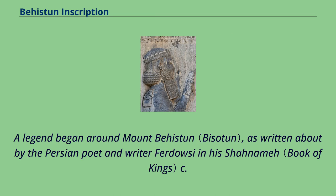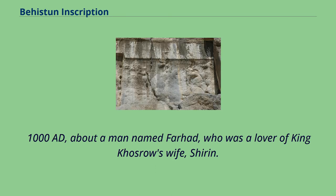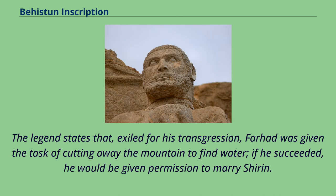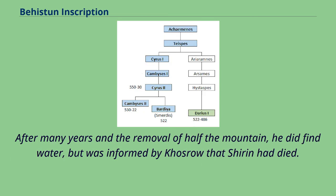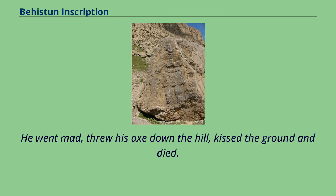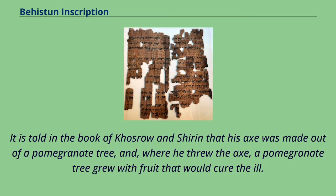A legend began around Mount Bagistan, as written about by the Persian poet Ferdowsi around 1000 AD, about a man named Farhad who was a lover of King Khosrau's wife Shirin. Exiled for his transgression, Farhad was given the task of cutting away the mountain to find water; if he succeeded, he would be given permission to marry Shirin. After many years and the removal of half the mountain he did find water, but was informed by Khosrau that Shirin had died. He went mad, threw his axe down the hill, kissed the ground and died. It is told in the Book of Khosrau and Shirin that his axe was made out of a pomegranate tree, and where he threw the axe, a pomegranate tree grew with fruit that would cure the ill.